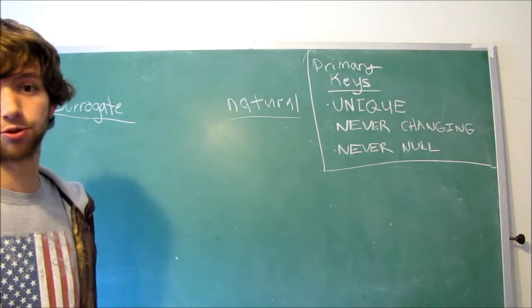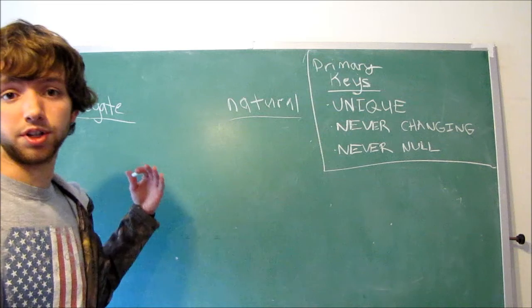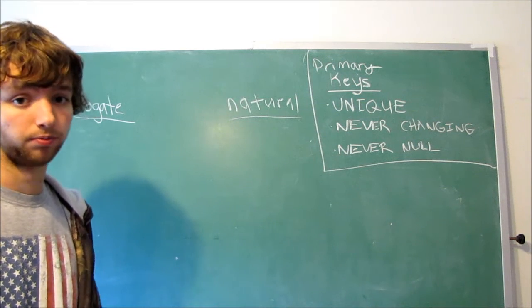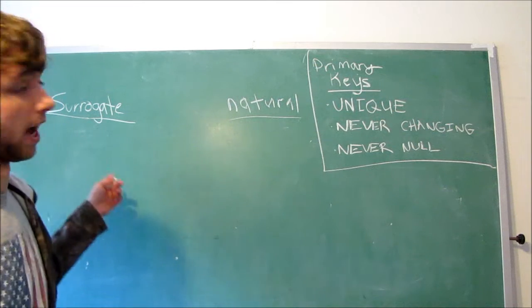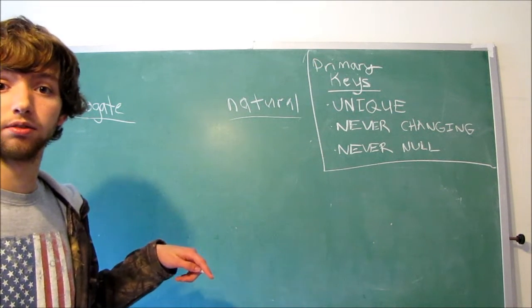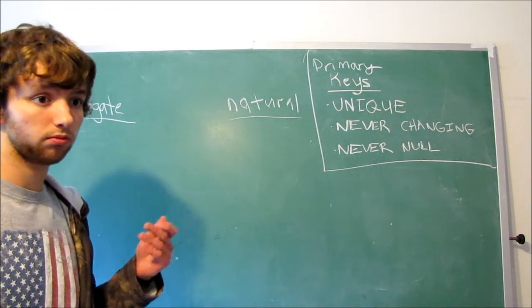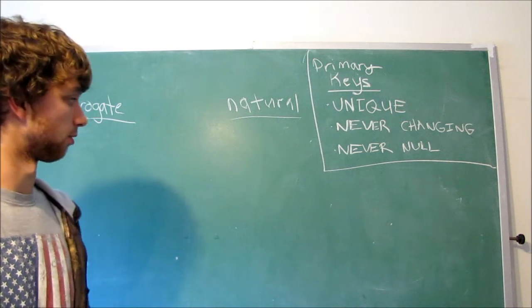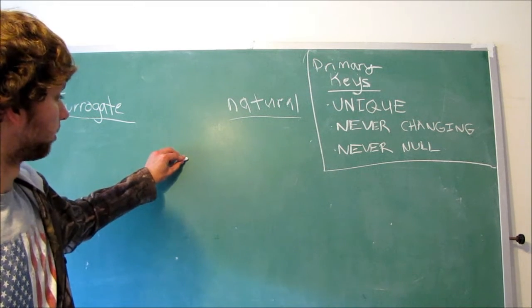One of the pros of surrogate keys is that they're typically numbers, where oftentimes natural keys can be words or anything like that. That's good because typically numbers are easier to work with, but not always. Now, a couple other things, besides the fact that you have to add new data, a new column, which requires you to store more data,